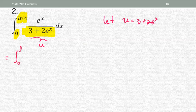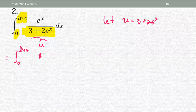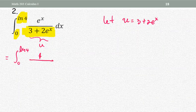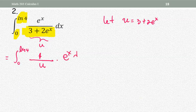Let's clean up one piece at a time. From zero to natural log four, I'm going to write the integrand as a product: one over u multiplied by e to the x dx. The complicated part of the problem is now replaced with the u term. Next we're going to work on the e to the x dx part.